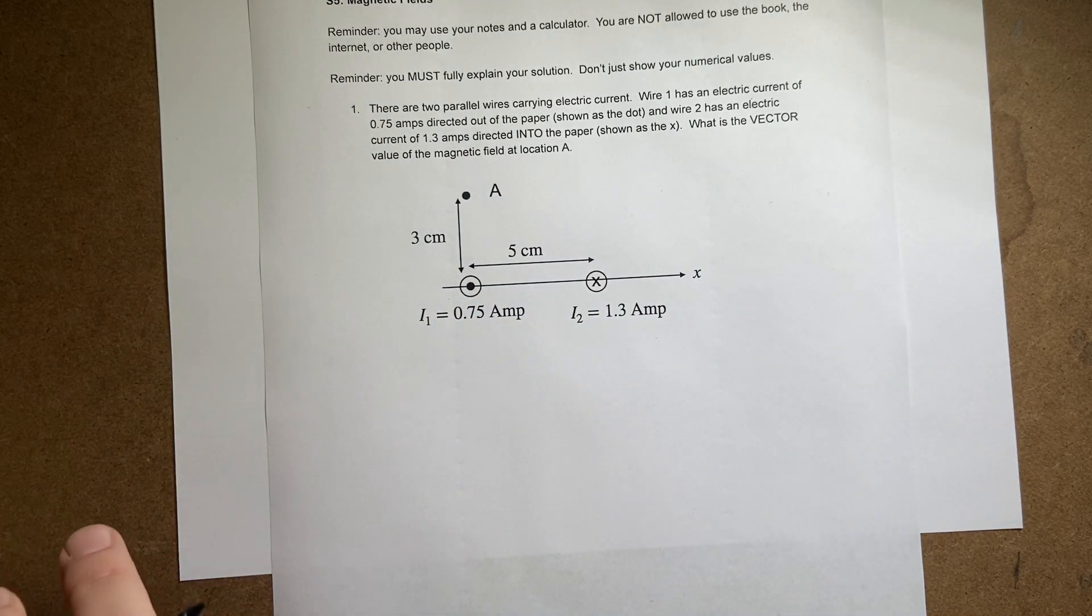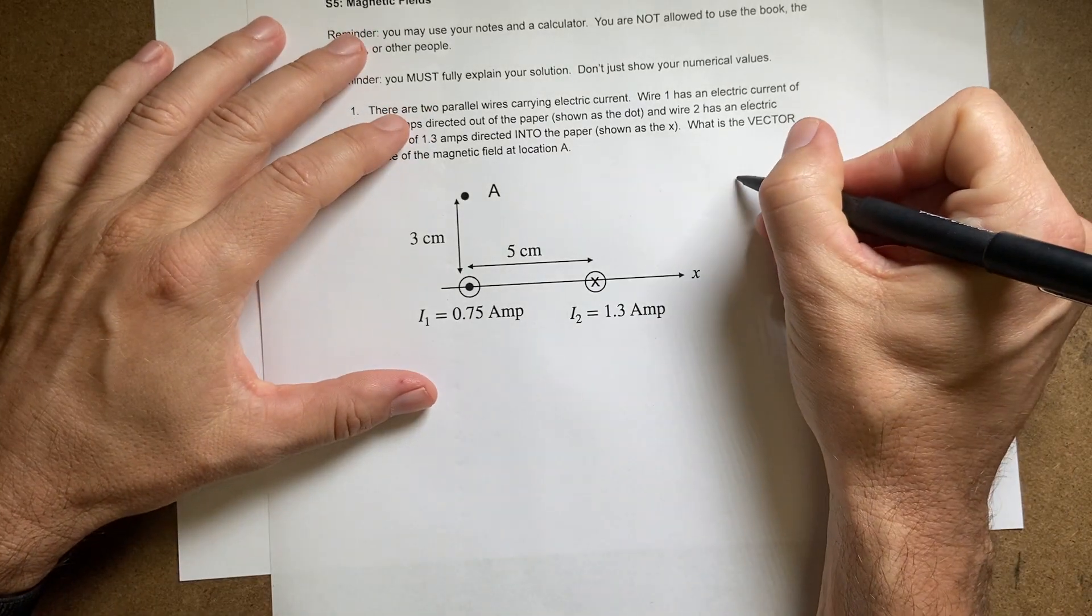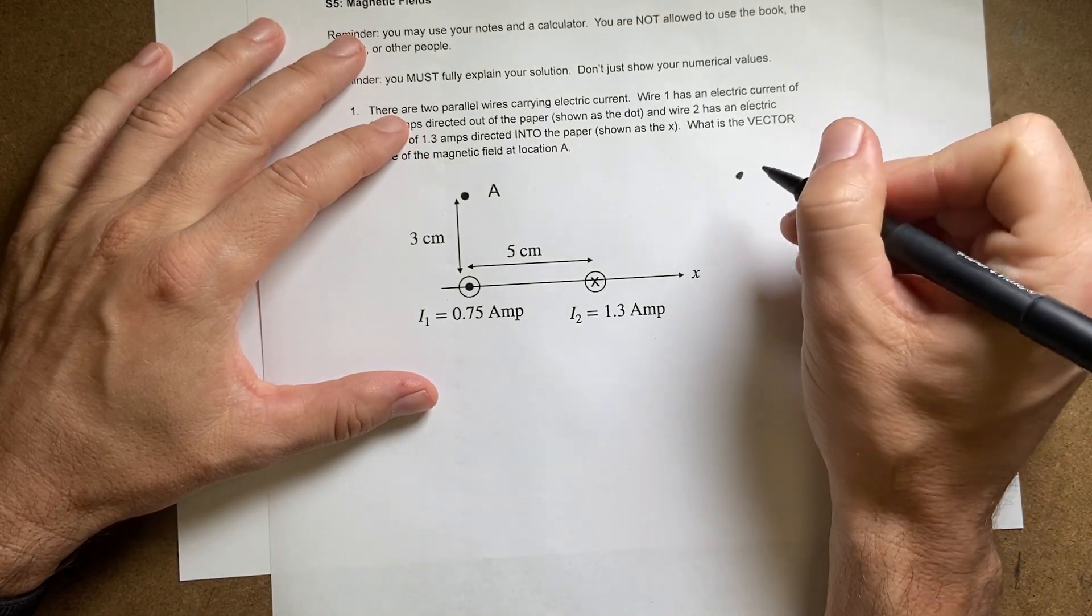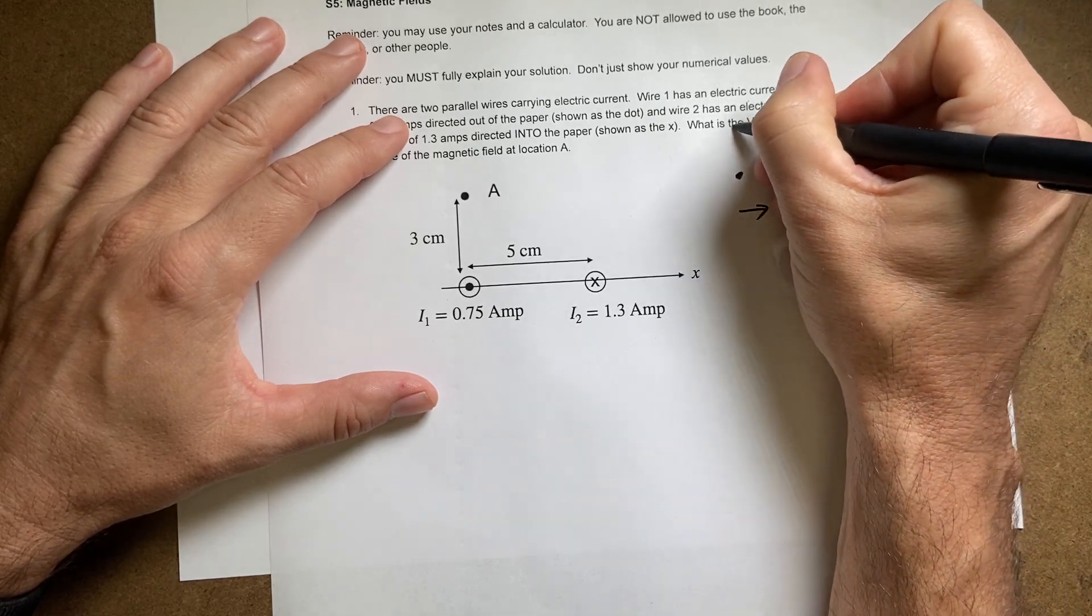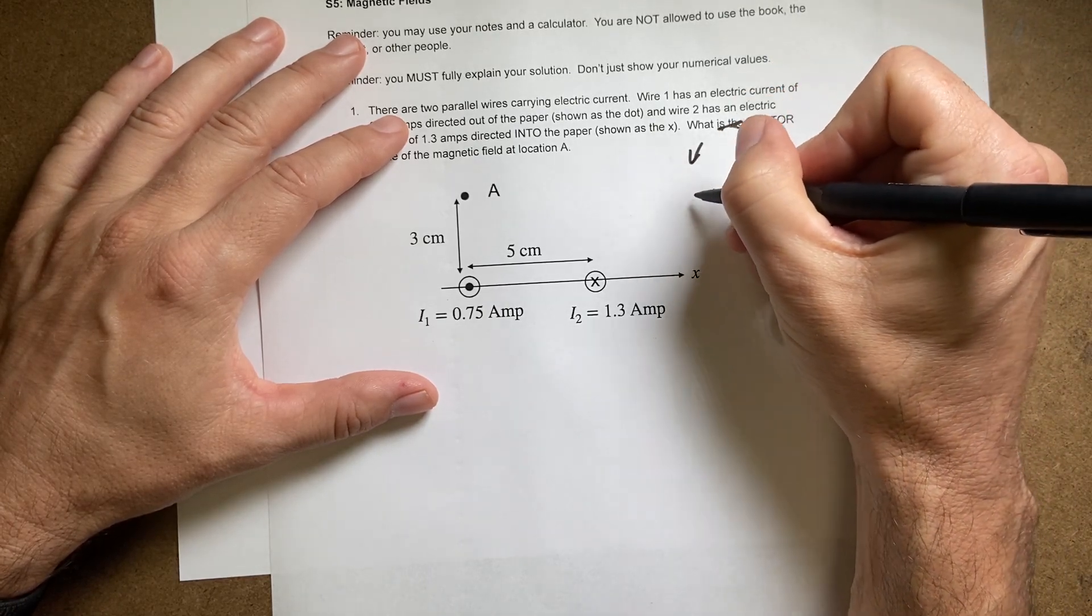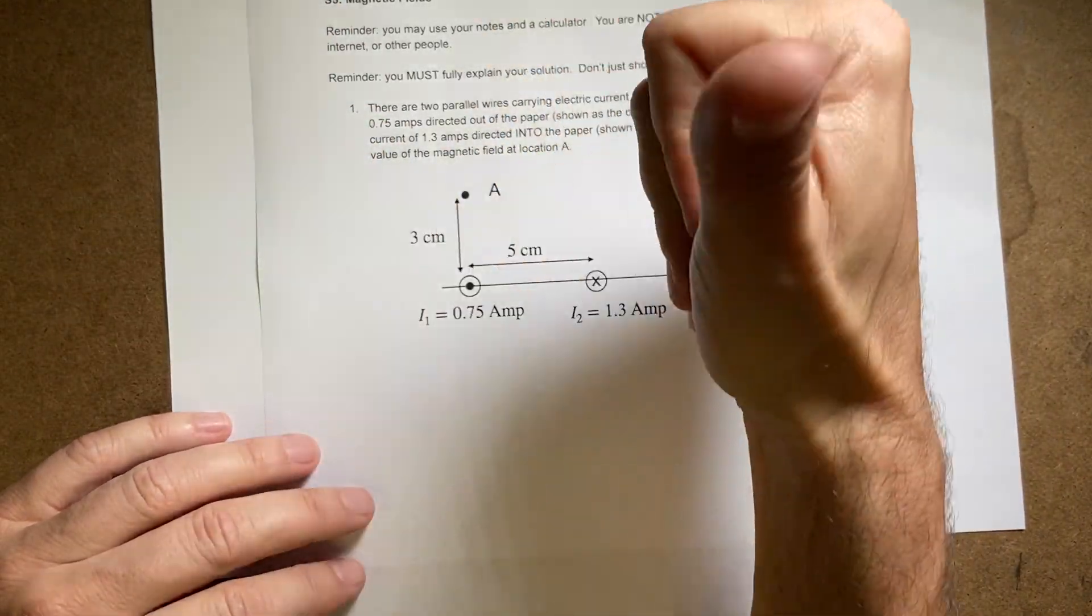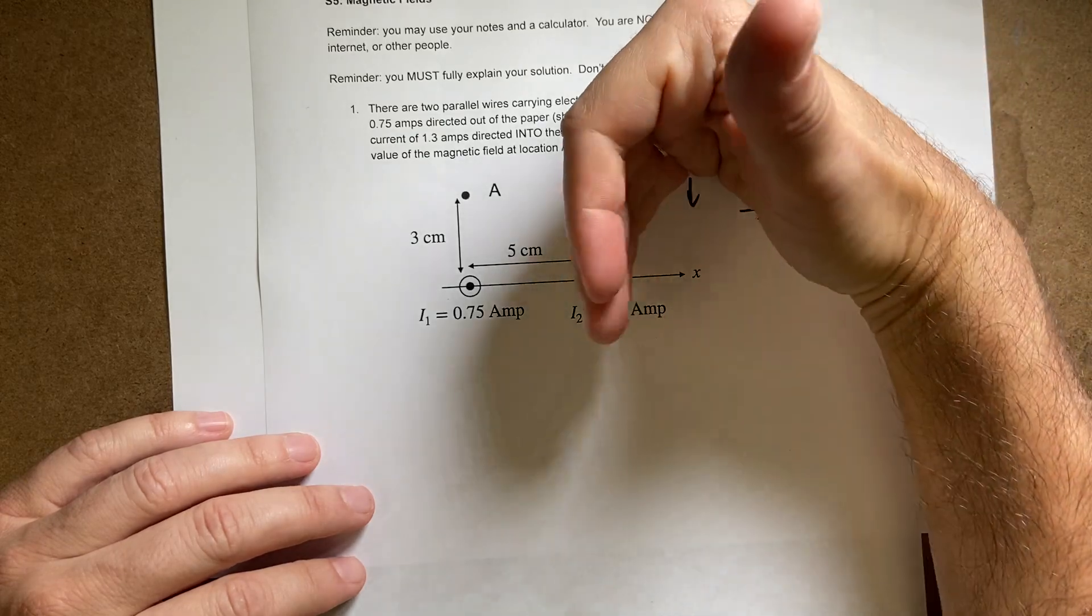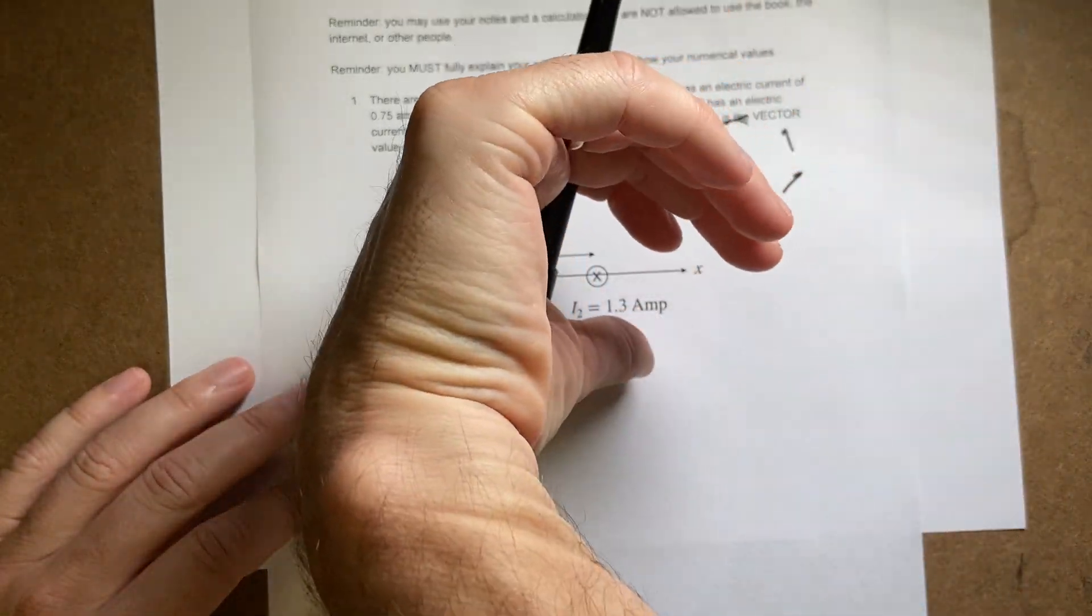The first thing you need to remember - if I have a current going this way, it makes magnetic fields that make a loop like this. We find that with the right-hand rule. If you take your right hand and put your thumb in the direction of the current, your fingers show the direction of the magnetic field.